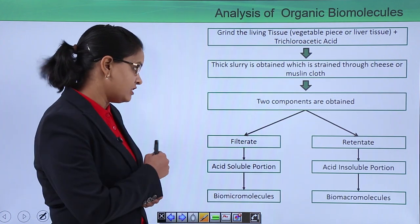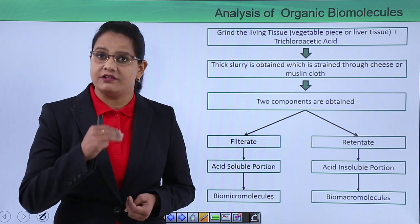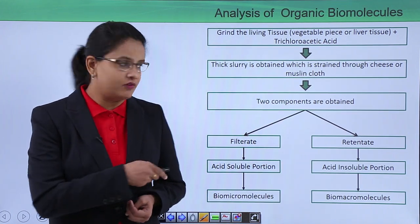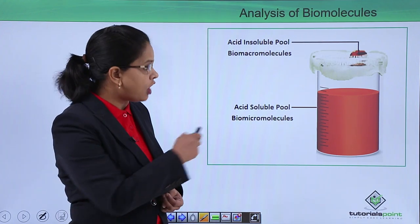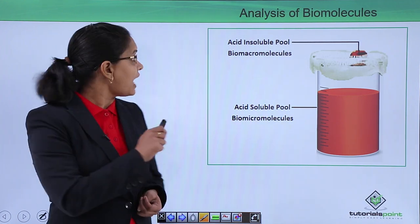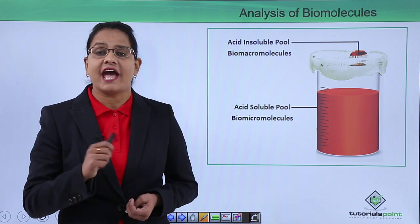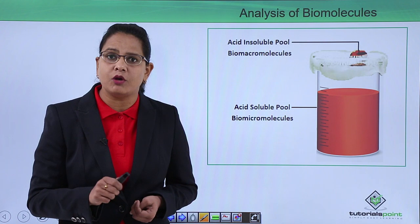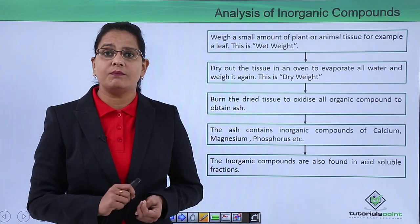These two components are filtrate and retentate. The filtrate is the acid soluble portion, and the retentate is obtained on the top of the cheese cloth - it is the acid insoluble fraction. In this figure, the acid soluble fraction which goes through the filter is also termed biomicromolecules, and the acid insoluble pool obtained on top of the cheese cloth is termed biomacromolecules. We will discuss biomicromolecules and macromolecules in later videos.